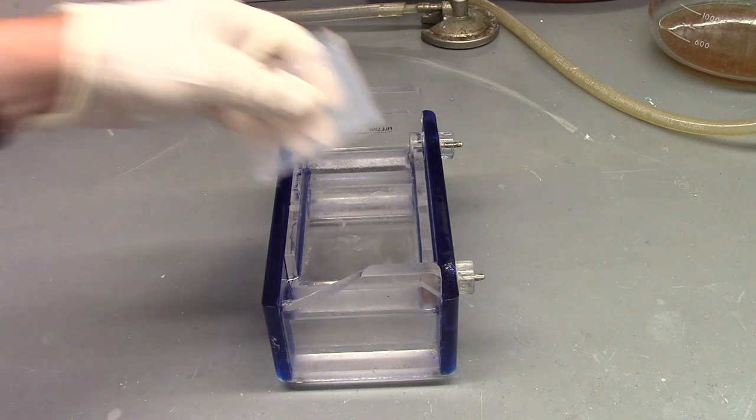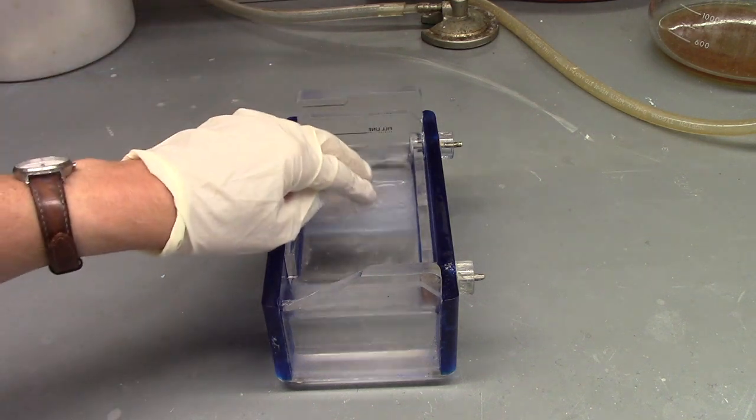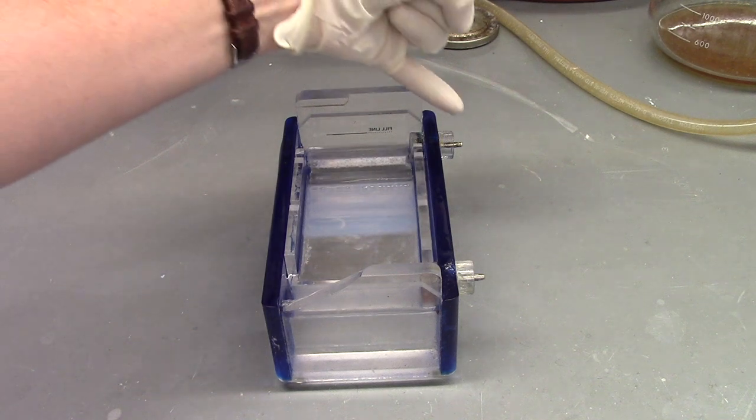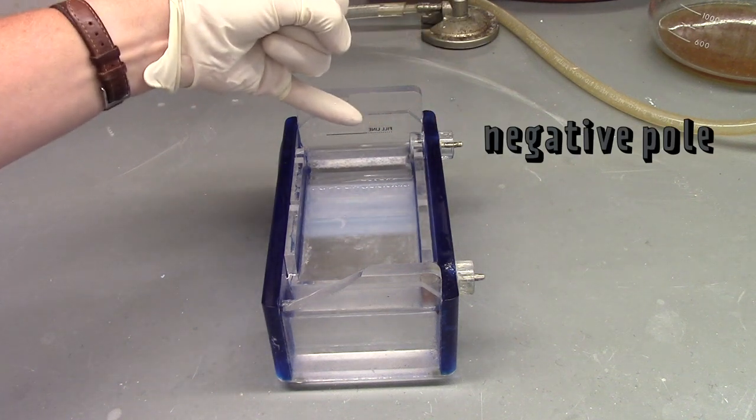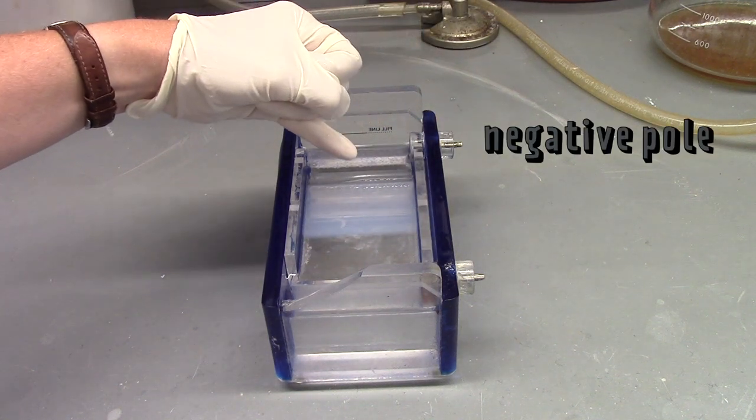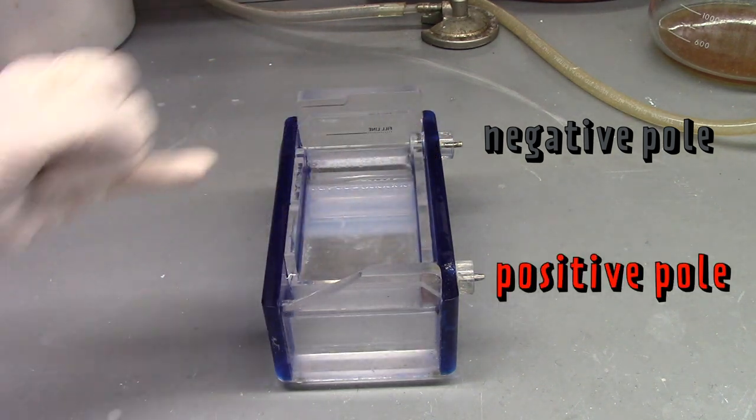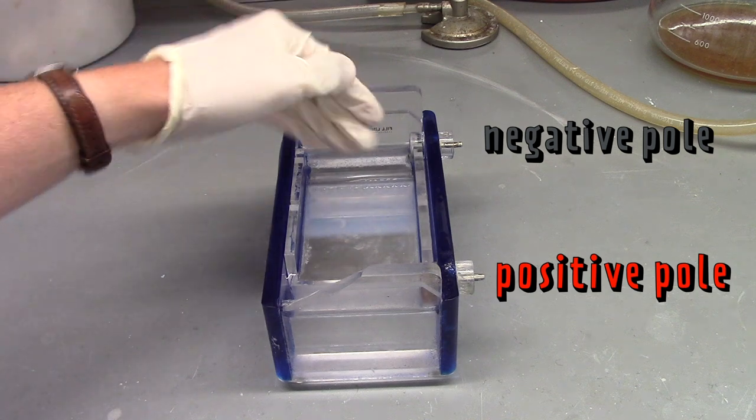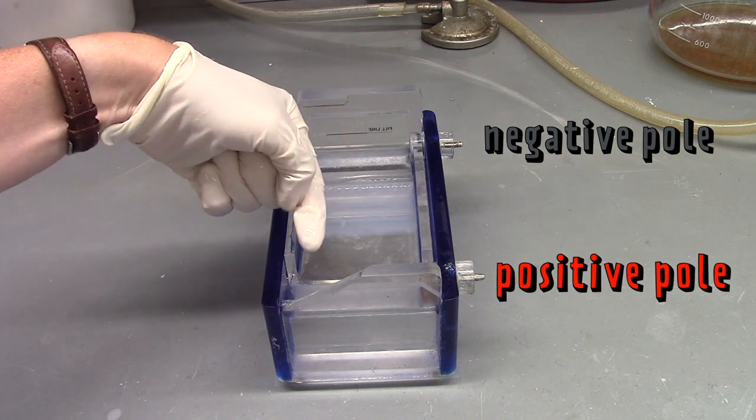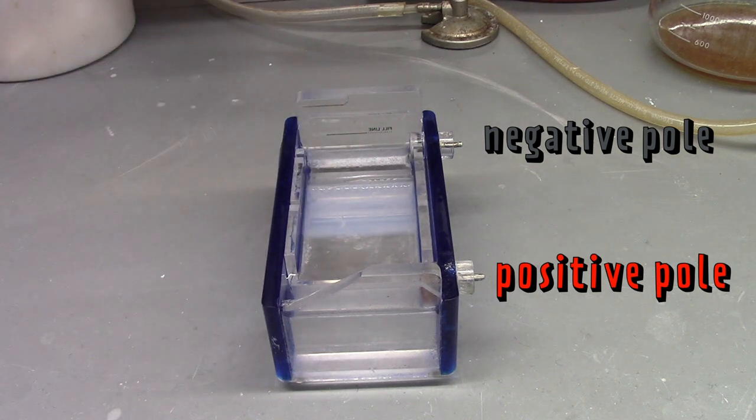To use the electric current, I put the gel in this gel rig, which is full of buffer. And then I apply electricity, and the electricity comes in from the negative pole here. And it runs through the buffer, through the gel, to the positive pole. And the DNA is negatively charged, so it's going to run from up here to down here in the gel. And that's going to help me separate the DNA by size.